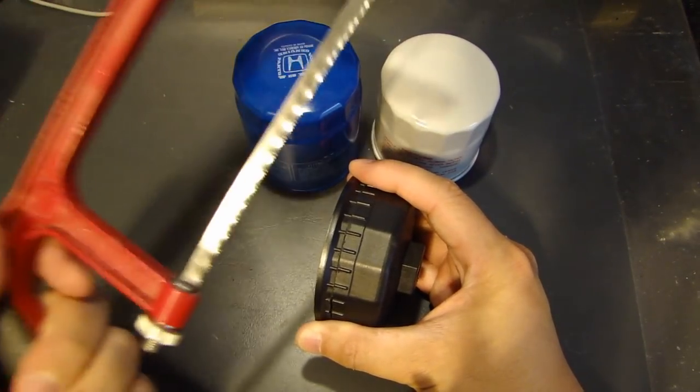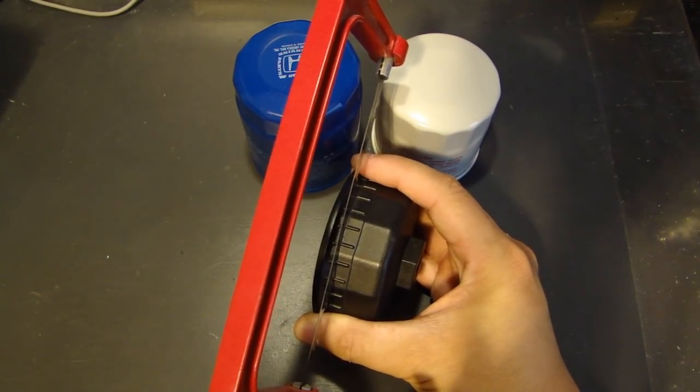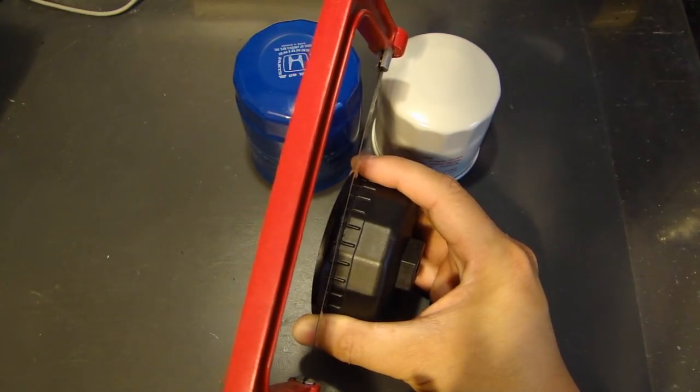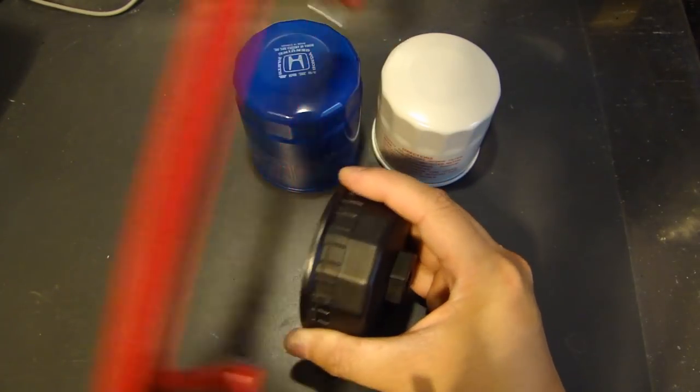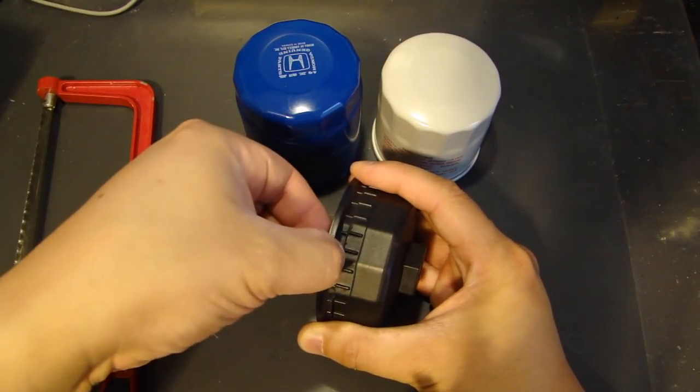So the first thing you want to do is get a saw and saw off most of the 67 millimeter size on the filter wrench. So you go around the entire filter wrench and you cut a ring off where the 67 millimeter is.